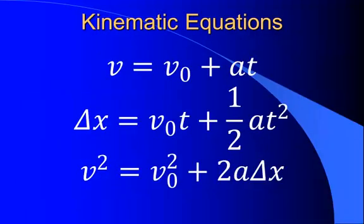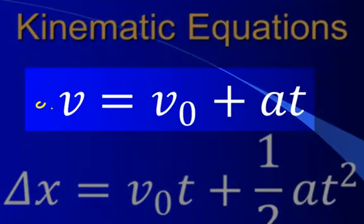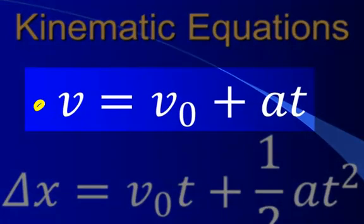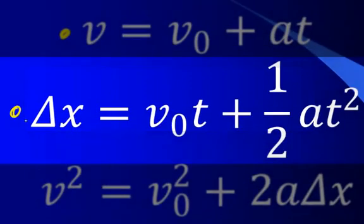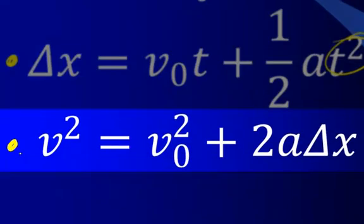The kinematic equations themselves, there are three of them. The first says that the final velocity is equal to the initial velocity plus acceleration times time. The second says that the displacement is equal to the initial velocity times time, plus one-half times the acceleration times the square of the time elapsed. And finally, the final velocity squared is equal to the square of the initial velocity, plus 2 times your acceleration times your displacement.